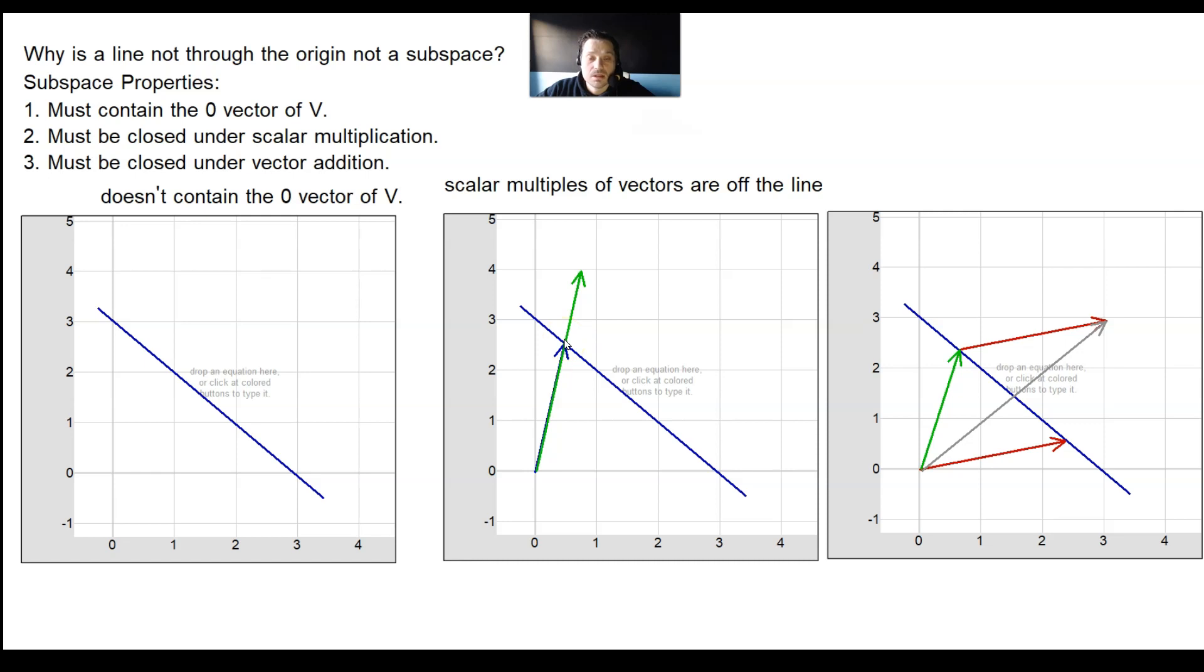Remember, closed means if you multiply it by a constant, it would be kept along that line. That's not happening here, it's going off it. And lastly, you must be closed under vector addition.